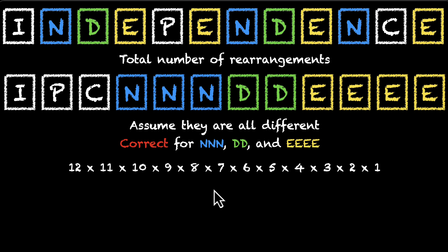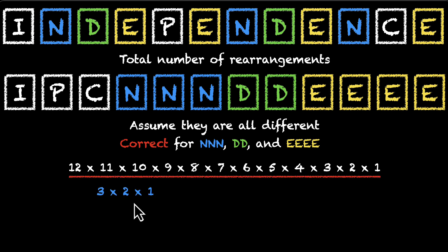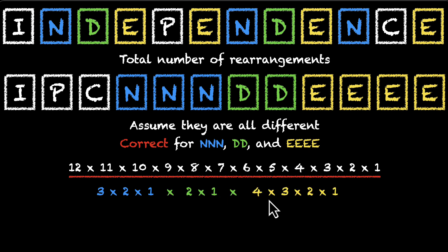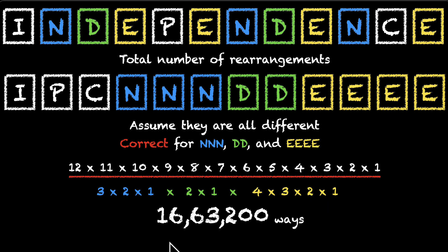We correct for all three repeated groups. So the formula is 12! / (3! × 2! × 4!). If you punch these numbers into the calculator, you'll get the result: there are roughly 16 lakh ways to arrange the letters of the word independence.